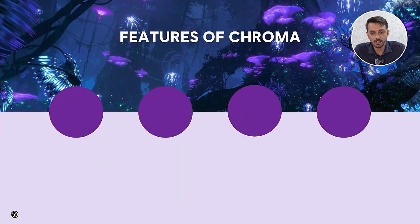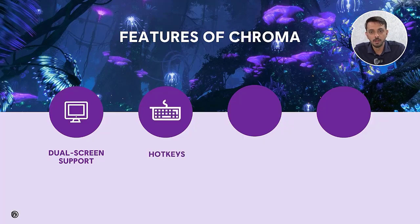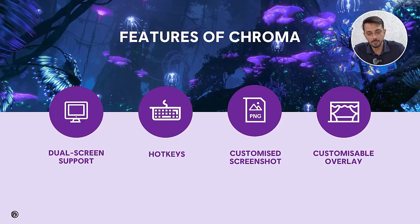Chroma comes packed with features to enhance usability and accessibility. It offers flexible screen options — it can be utilized on either dual or single screens, making it versatile for different setups. Users can operate Chroma using assignable hotkeys. It also provides dual-view screenshot capturing, which merges both the original and altered app states in a single image. Users can also customize the overlay by dragging the borders of the Chroma UI in either direction.